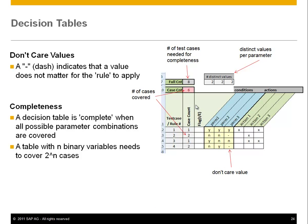A few more things are important about decision tables. Number one, I already mentioned those don't care values. A dash in a certain value means that the parameter value doesn't matter for the rule to apply. So it means that if parameter one is no, parameter two is no, three doesn't matter anymore — action two is supposed to happen. This reduces the number of rules or things you have to cover because that value doesn't matter anymore.